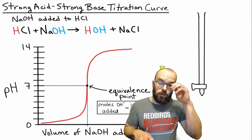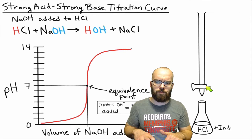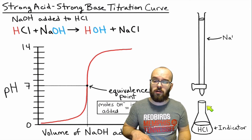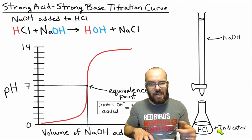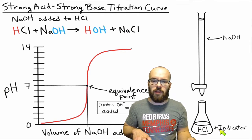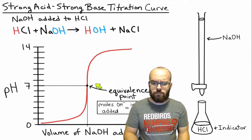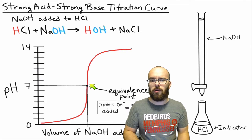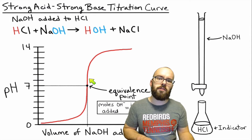Whenever you do a titration you're going to use an apparatus called a burette — a long glass funnel with a valve at the bottom — and you're going to have an Erlenmeyer flask filled with the acid. It's also going to have an indicator, which is a special molecule that changes color at a certain pH. The most common one for this type of titration is phenolphthalein, which will change color from clear to pink at a pH of about 8.3. Looking back at our graph, the equivalence point is at pH 7, but pH 8.3 is right nearby, so we can use phenolphthalein as our indicator.